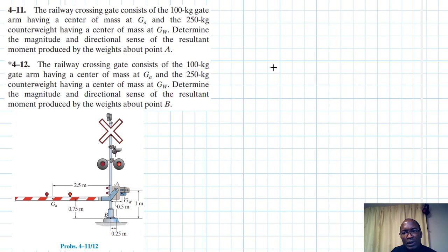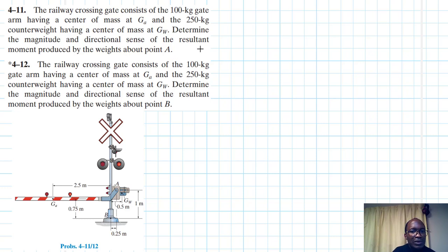Hello, I welcome you all to this another interesting screencast. The problem reads: the rail line crossing gate consists of a 100 kg gate arm having a center of mass at GA, and a 250 kg counterweight having a center of mass at GW. Determine the magnitude and directional sense of the resultant moment produced by the weights about point A, and in the other case, about point B.